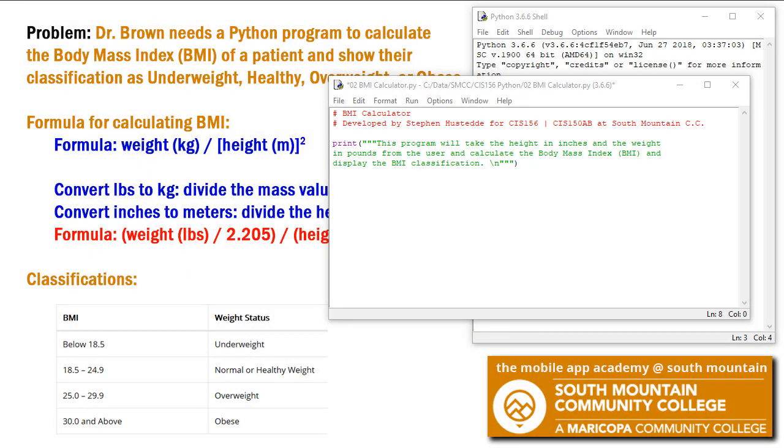I didn't think you needed to see me type all this in. So I added a comment of myself as the developer. And then created a print statement that basically tells the user what this program is going to do. We're going to get the input in terms of height and weight by inches and pounds. Calculate the BMI and display that in the BMI classification.